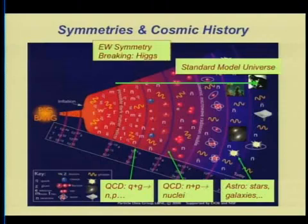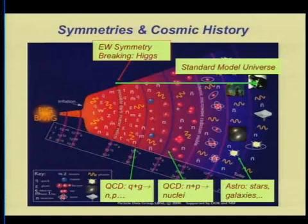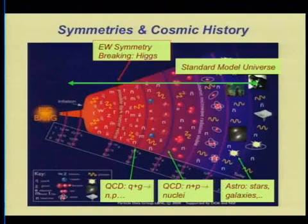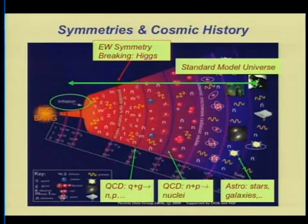We now know, with the discovery of the Higgs, that the standard model symmetries were broken around 10 picoseconds after the Big Bang. Going back in time, one other piece of the puzzle that is probably correct is the idea of inflation as being responsible for the isotropy and homogeneity of the universe.